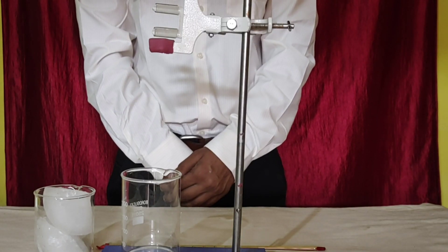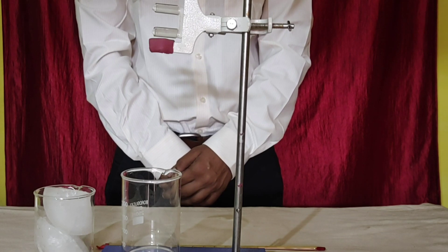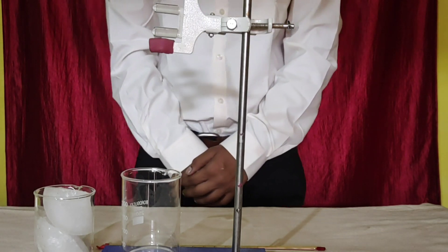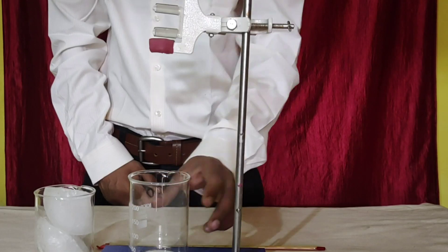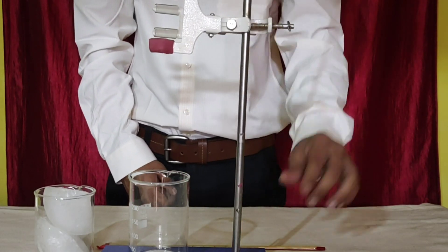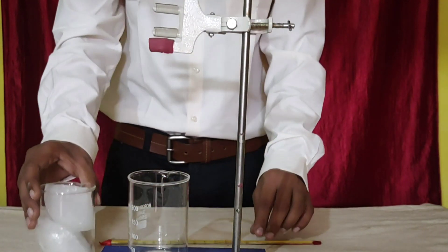Let's perform part B: Determination of melting point of ice. Material required: Beaker, Stand with clamp, Thermometer, and Ice.